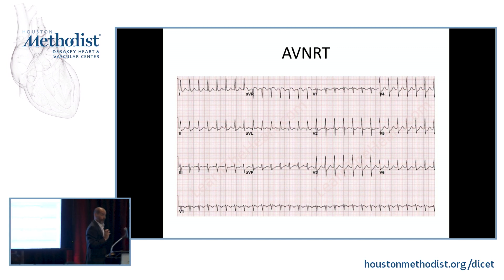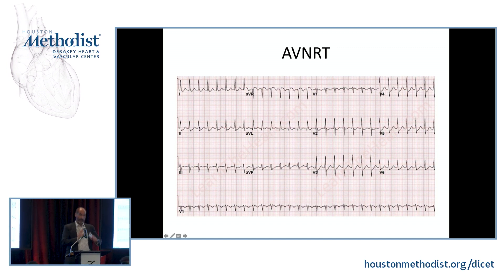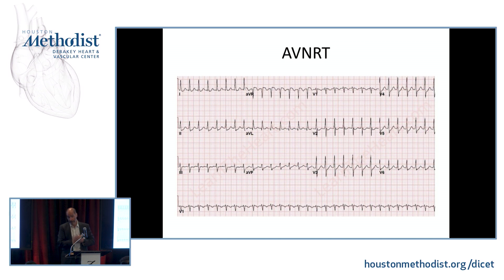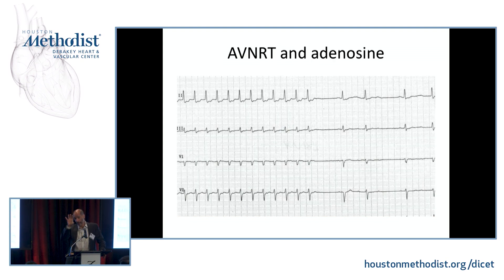If it's retrograde conduction, it will be midline in the atrium — in the septum between the right and left atrium — and will go from low to high. So it will be a negative P wave in leads 2, 3, and AVF, and narrow in V1, V2, V3 because it's septal. This is as opposed to a sinus P wave that goes first right atrium then left atrium and is much wider than the retrograde P.